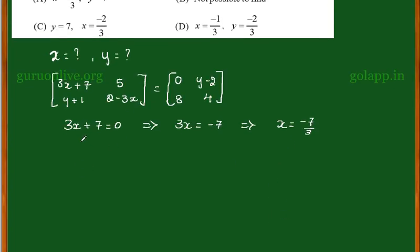Next element is we have LHS as 5 and the RHS is Y minus 2. This implies I need to solve for Y. So Y equal to 5, I am shifting the 2 to LHS, I get 5 plus 2. So this implies Y is equal to 7.